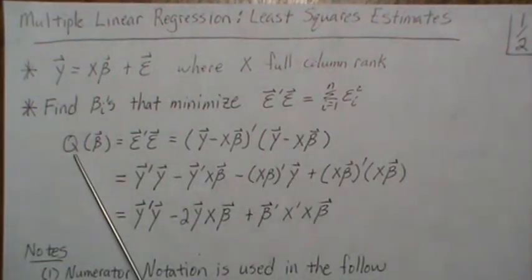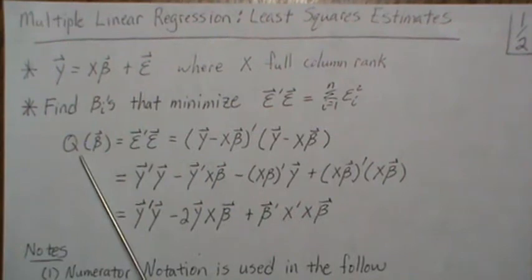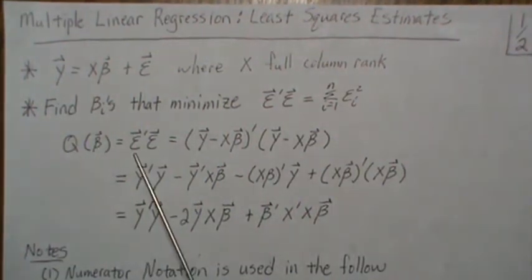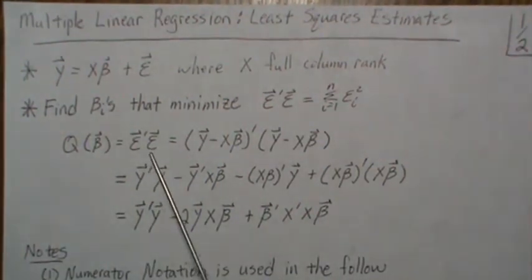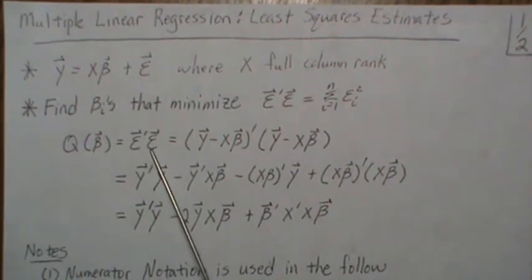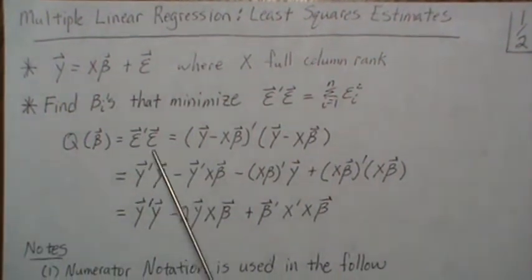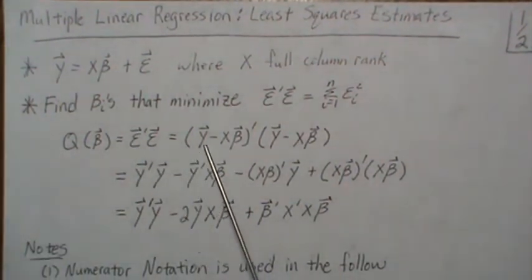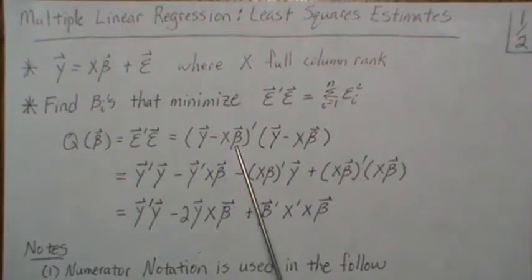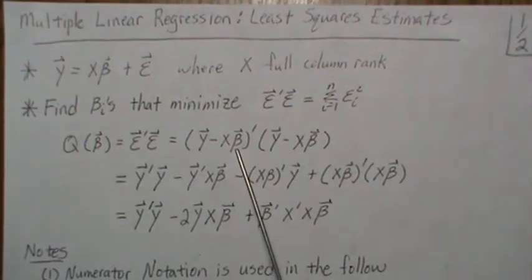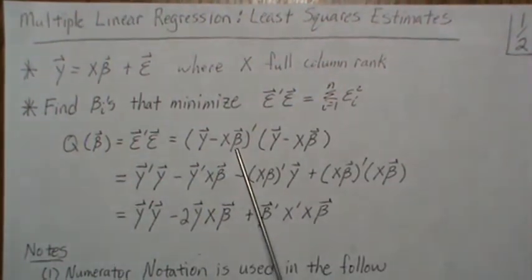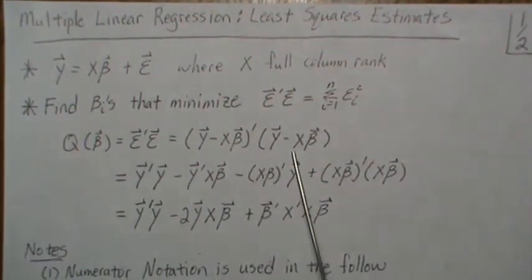For some reason I think that seeing it in scalar notation sometimes helps, so that's why I will often write it in both. So this squared error — we're going to try to make it a function of the betas. We have epsilon transpose epsilon, but let's plug in what epsilon is: Y minus X beta.